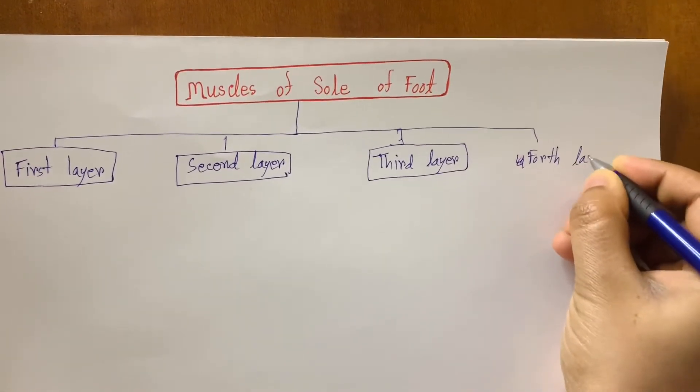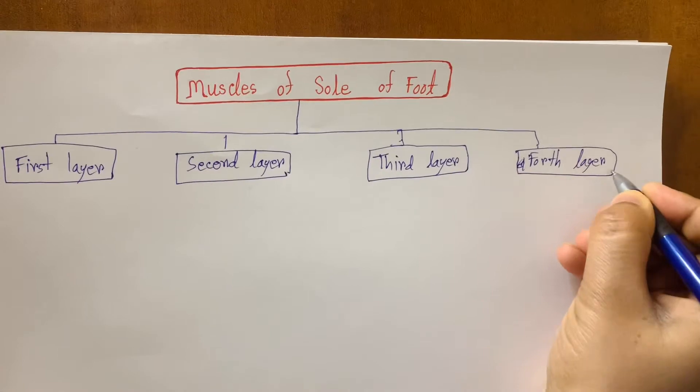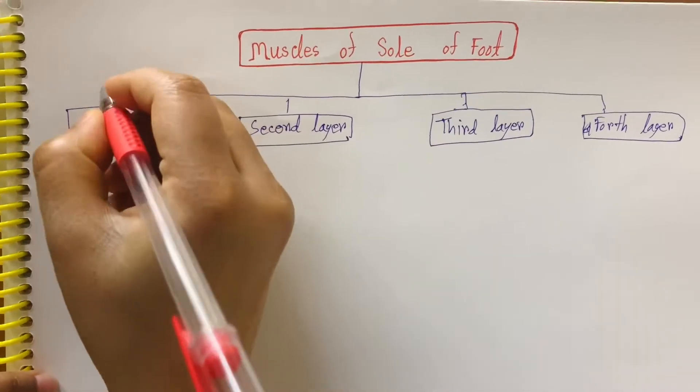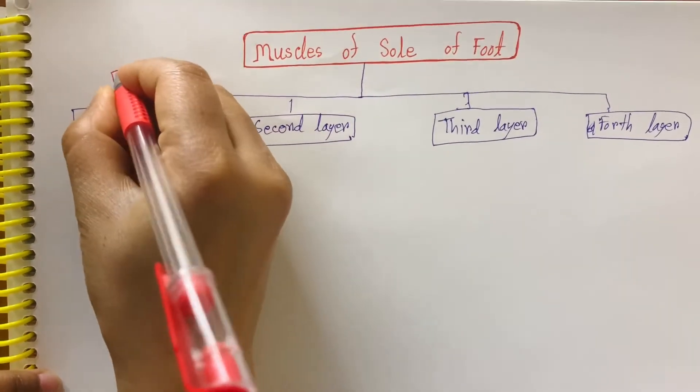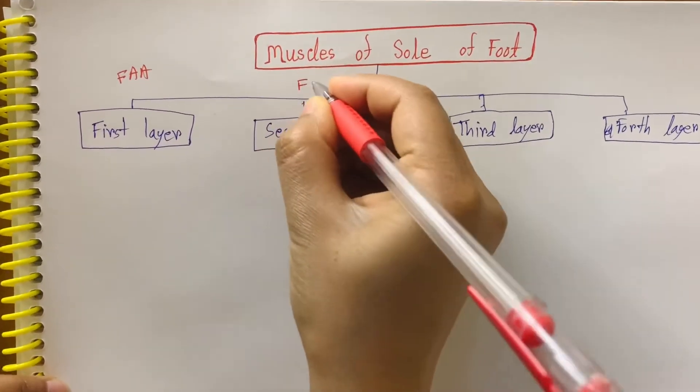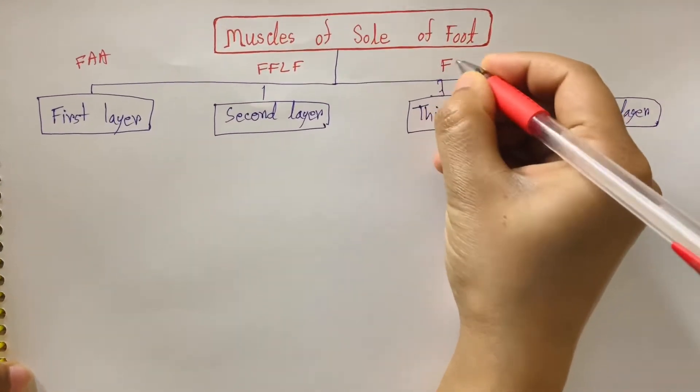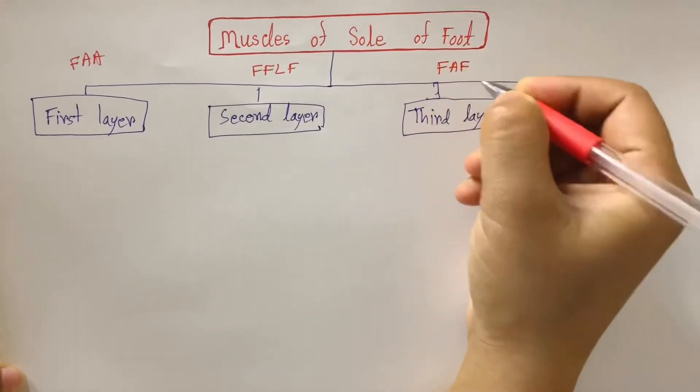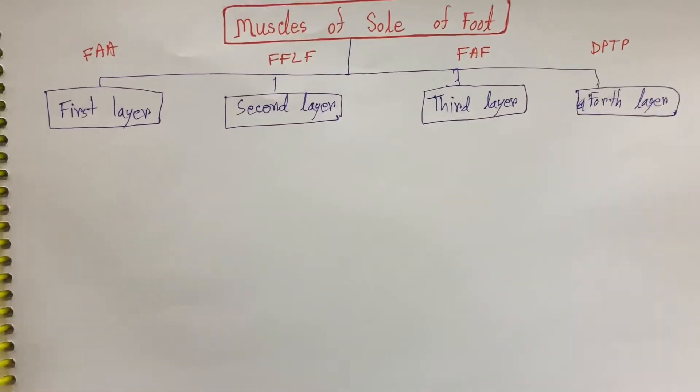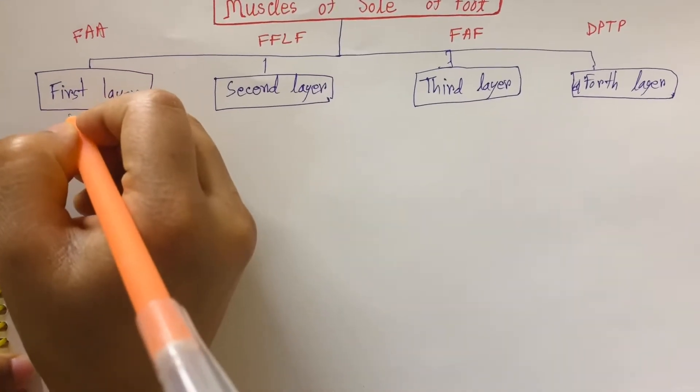We can remember their name with this technique. For first layer muscles: FAA. For second layer muscles: FFLF. For third layer: FAF. For fourth layer: DPTP. This is how I remember their name. First, let's see first layer muscles. We have three muscles here.